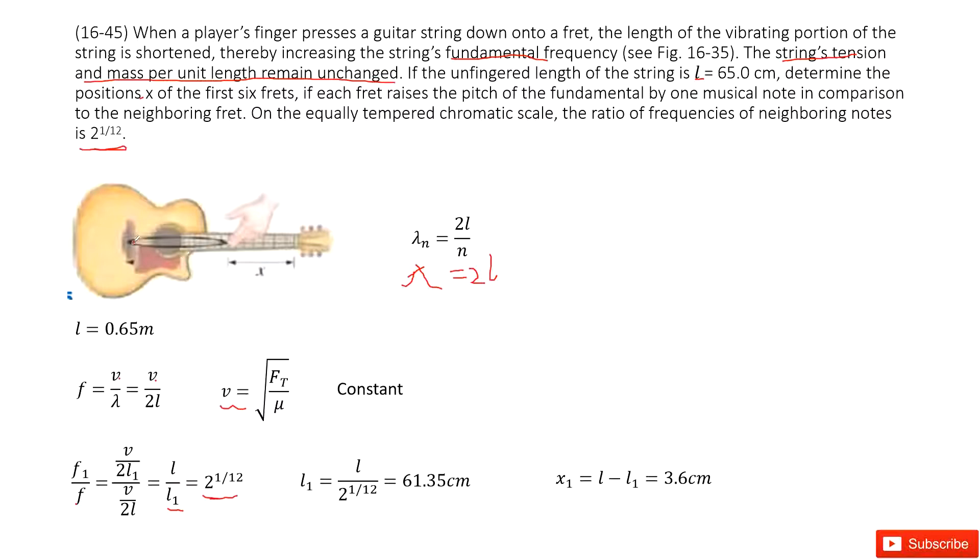So it looks like L1 is this length. L1 is this length. So we can write that L1 is L over this ratio. Get the number there. Therefore, we can get x1 is use total L minus L1. This is how we can get it for first fret.